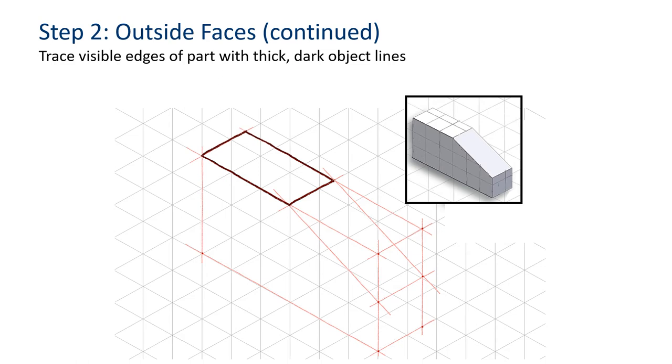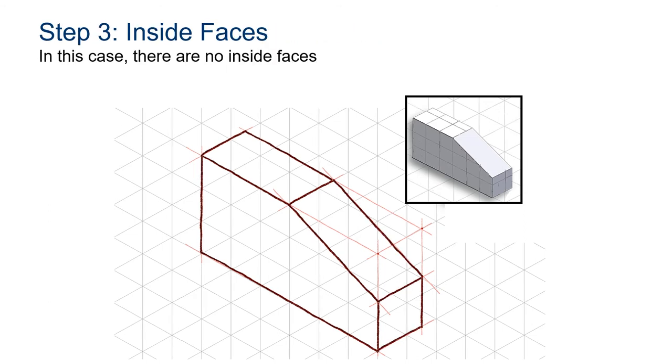Then you trace visible edges of the part with thick, dark object lines. Just like that. And in this case, there are no inside faces, so you don't have to draw what's inside the box.